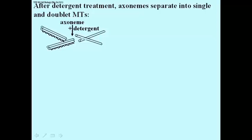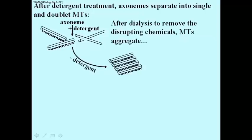Illustrated on these doublets are the dynein arms as well. If you dialyze this preparation to remove the detergents and chemicals which had disrupted the microtubule structure of the axoneme, the microtubules will re-aggregate — not into an axoneme, but into a sheet of doublets shown here.